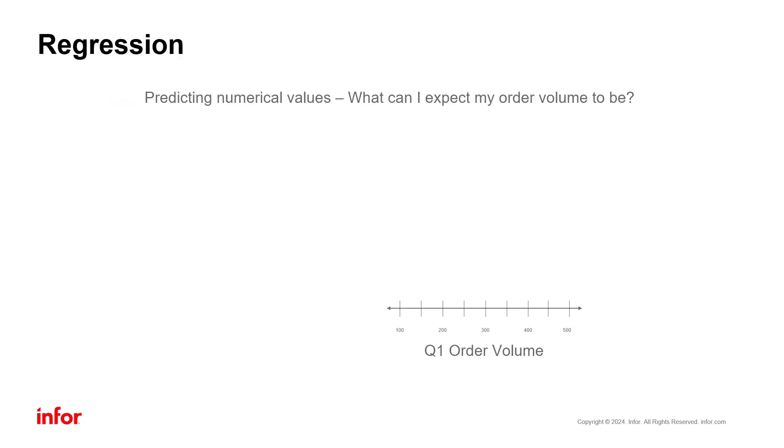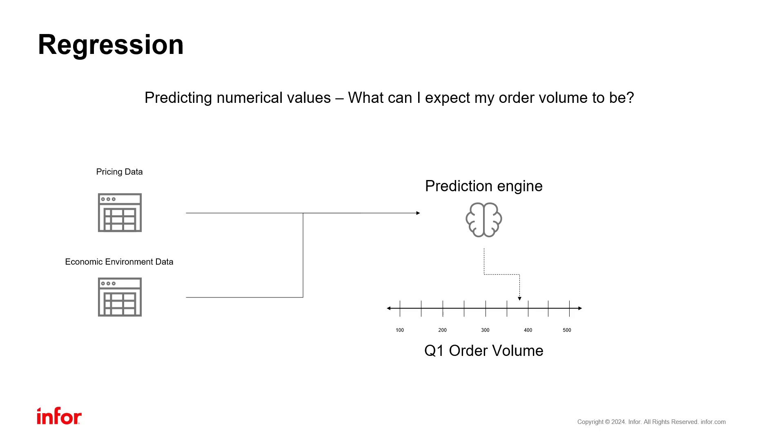Regression models, on the other hand, predict numerical values, such as predicting sales revenue given advertising spend, or predicting order volumes given pricing and market conditions.